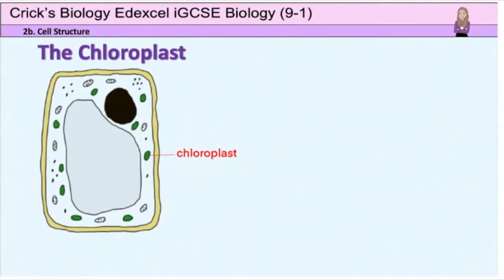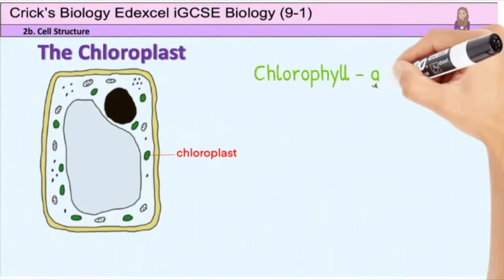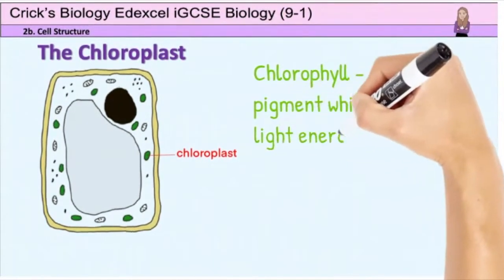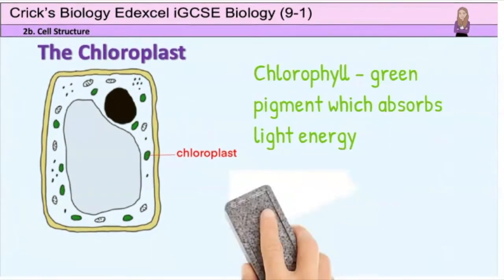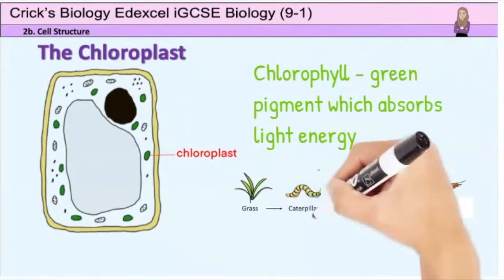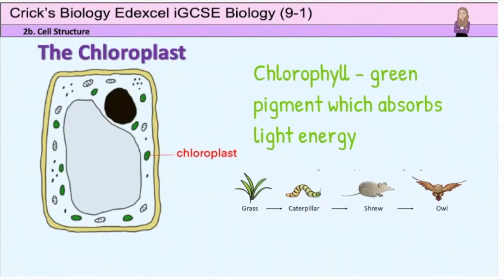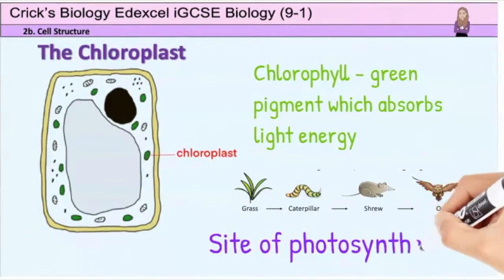Last but certainly not least are the chloroplasts. These are green as they contain a green pigment called chlorophyll, which absorbs sunlight energy for photosynthesis. Photosynthesis is the way plants make their own food and carry out nutrition — they cannot eat their own food. Green plants are at the start of most food chains and we rely on them for food, so the chloroplasts are very important. In an exam, your answer to what is the role of the chloroplasts is that they are the site of photosynthesis.